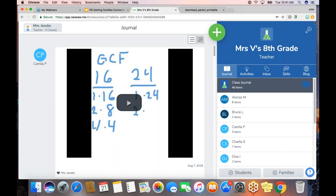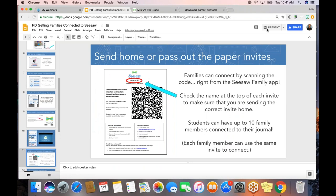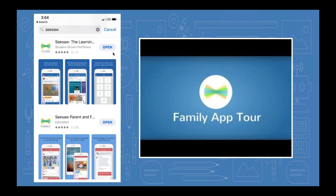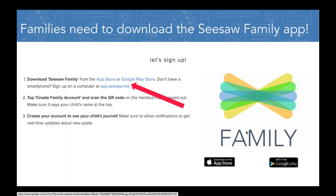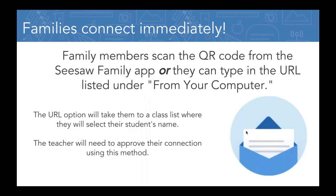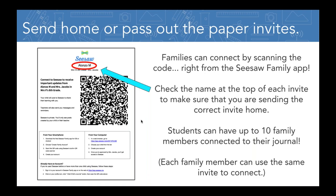So that's how we do it — starting with the plus Families button and then getting to the print paper invites. You saw how I generated the paper invitations and the student's name is at the top. Make sure you're sending home the right paper with the right student, because that is a unique code for them. Families can connect just by scanning this code in the Family app. Also, students can have up to 10 family members connected to their journal, so this paper can be used over and over — grandparents, aunts, uncles, whoever wants to connect.